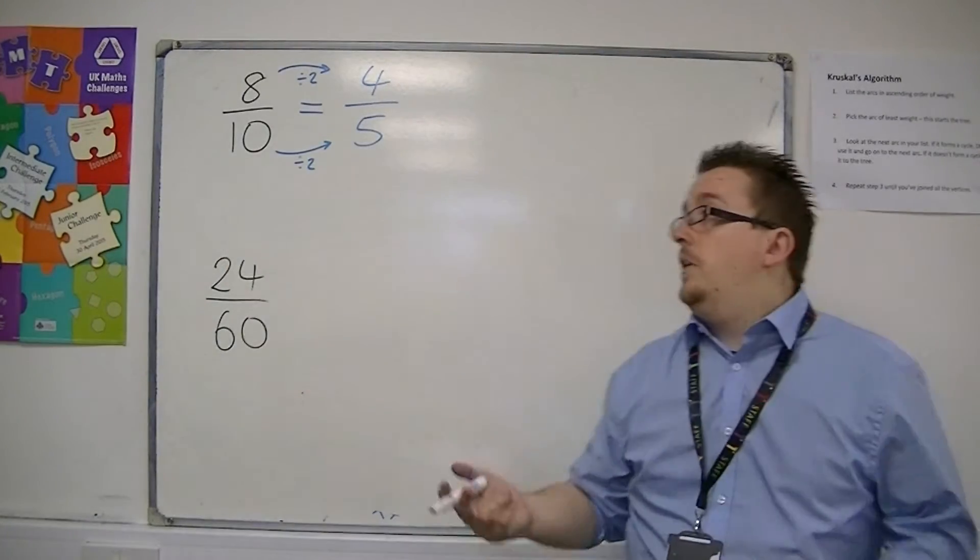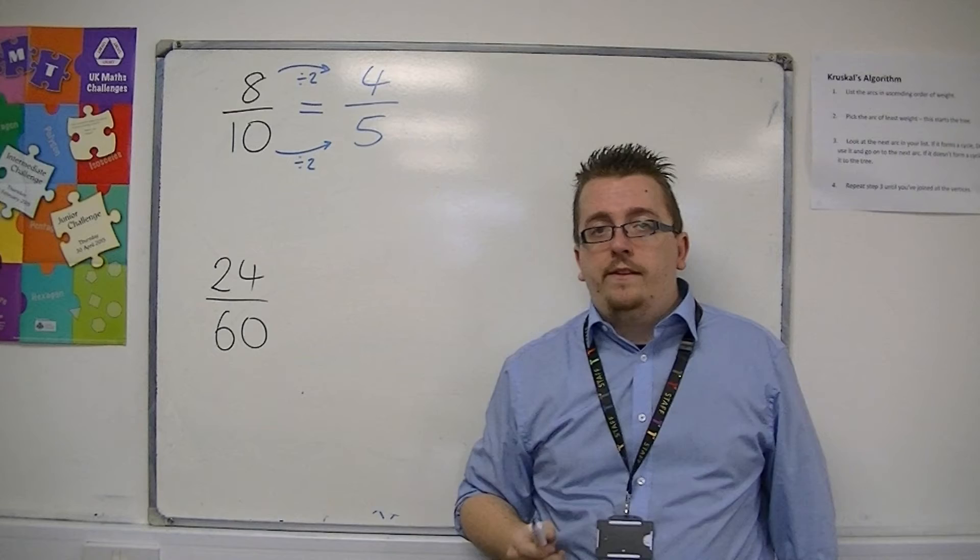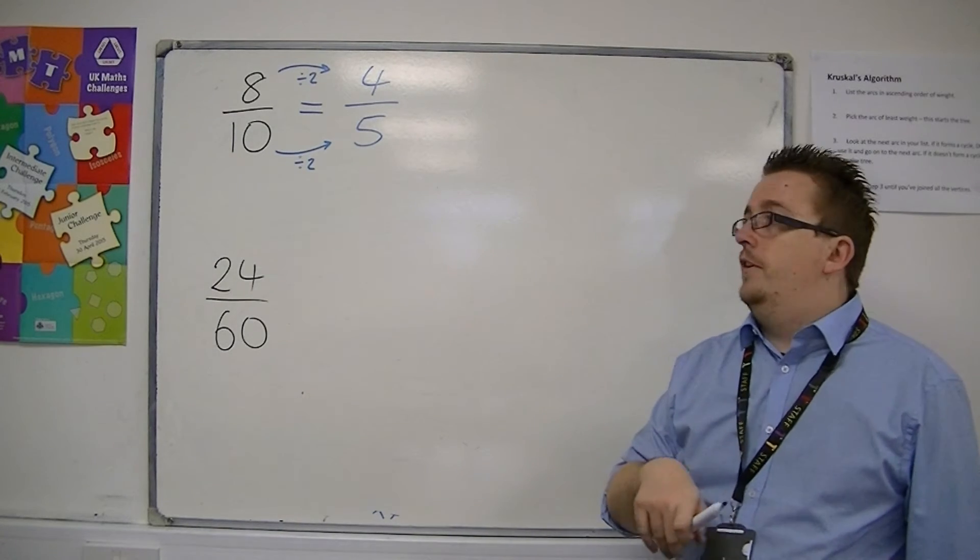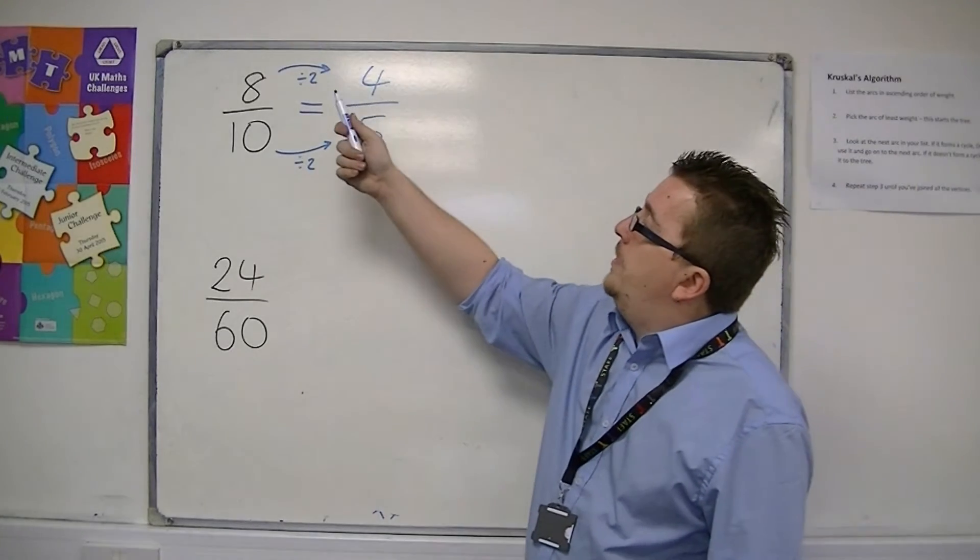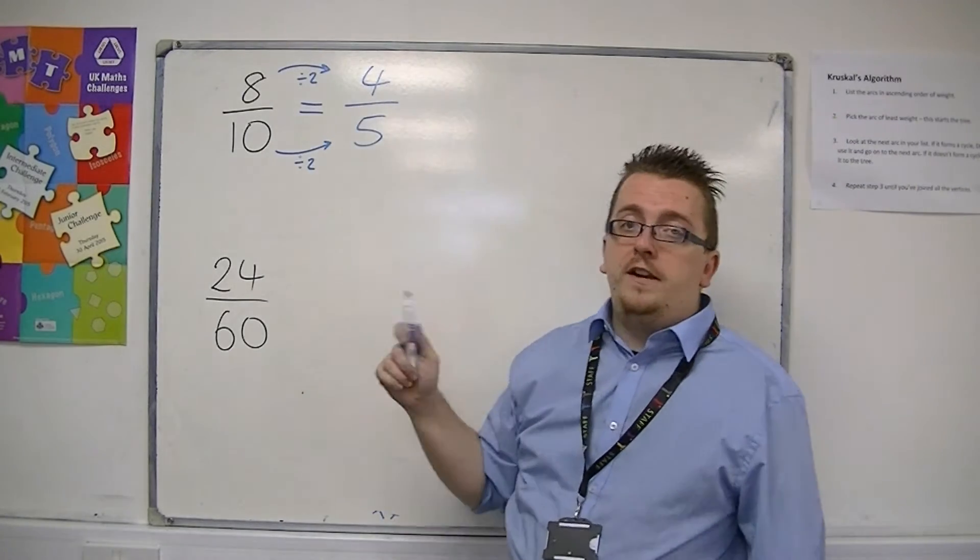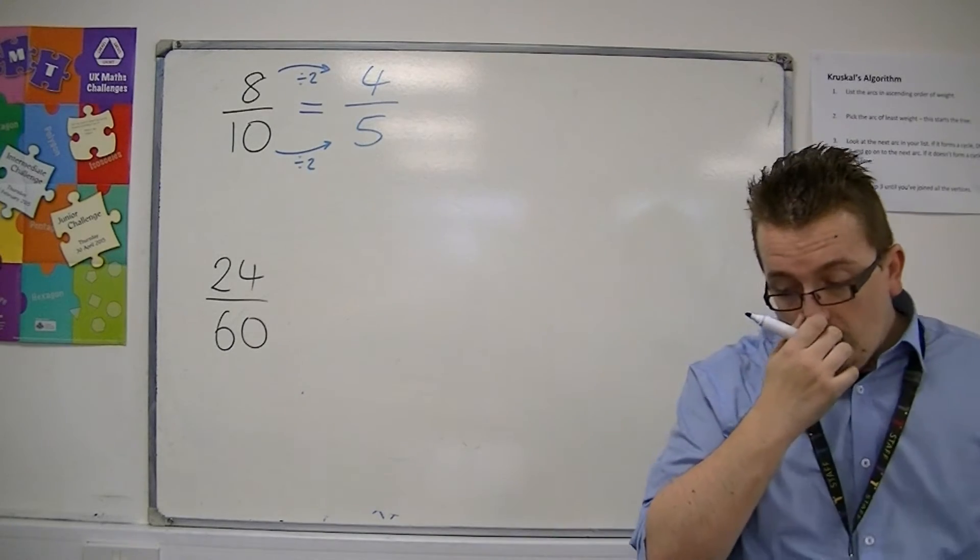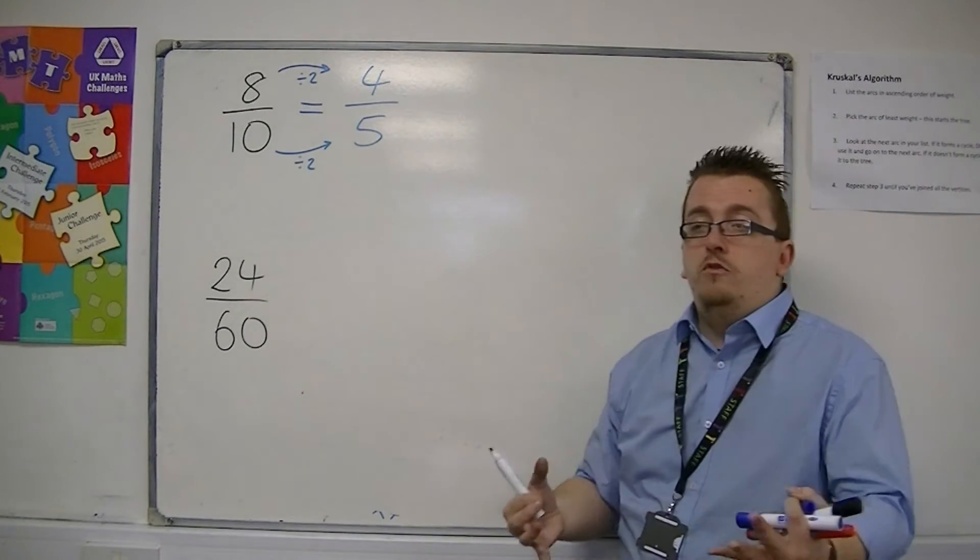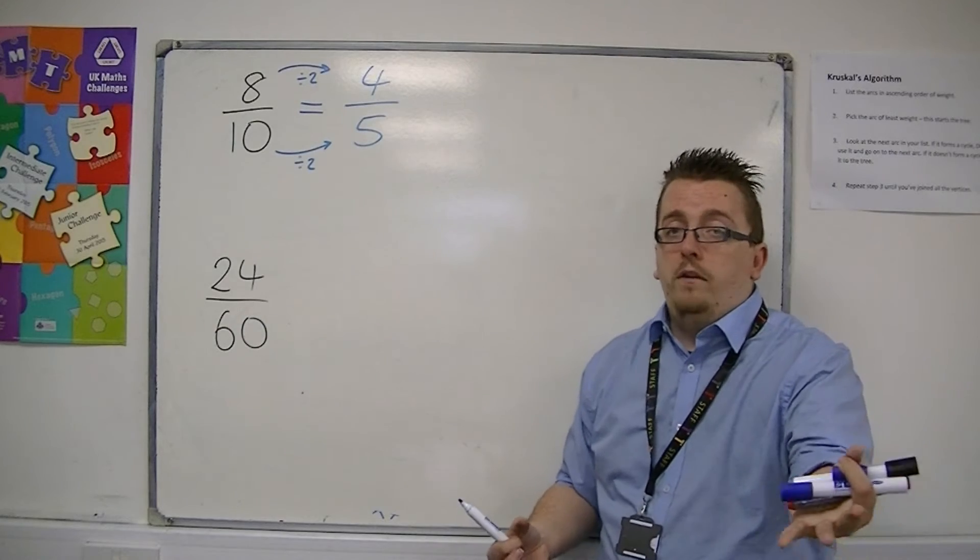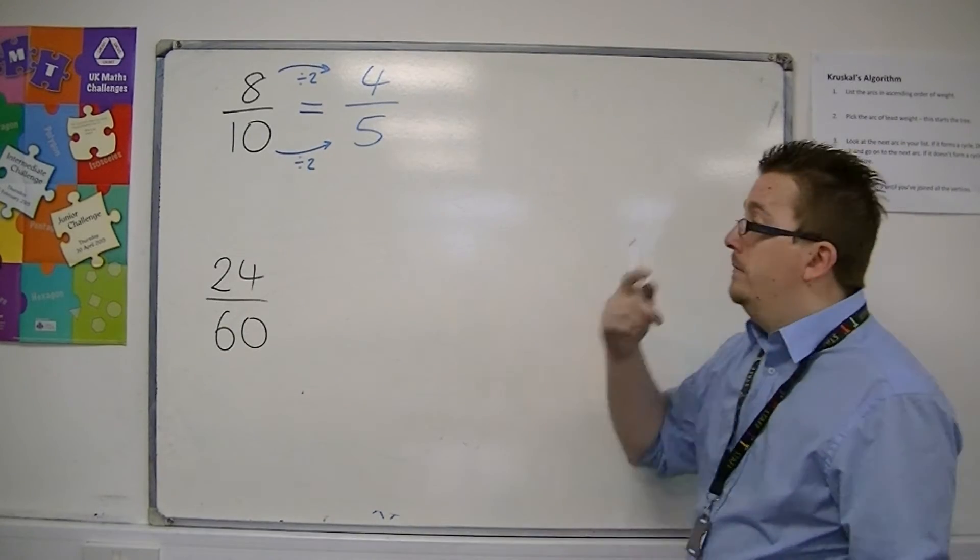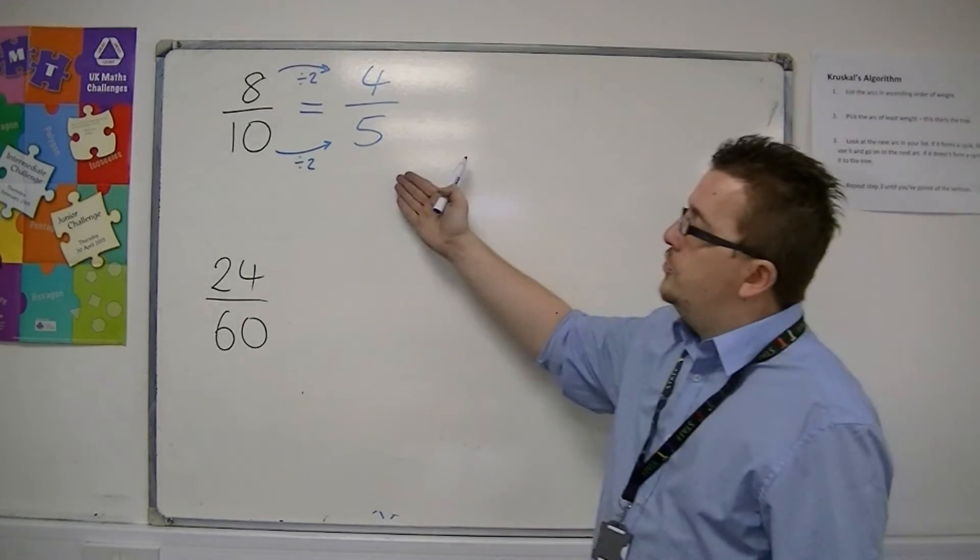So 4 fifths is an equivalent fraction to 8 tenths. And this is as far as I can simplify, because there is no number that I can divide into both 4 and 5 that will give me remainder 0. Other than 1, I could divide top and bottom by 1, but it's not going to change anything. So that is as far as you can go with this fraction.